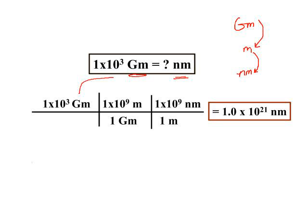Taking our 1 times 10 to the third gigameters, setting up our problem so that gigameters cancels, and putting in the correct conversion factor. 1 gigameter is a billion or 1 times 10 to the ninth meters, right there, and 1 meter is a billion nanometers, or 1 times 10 to the ninth nanometers.